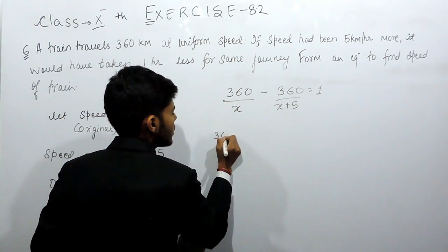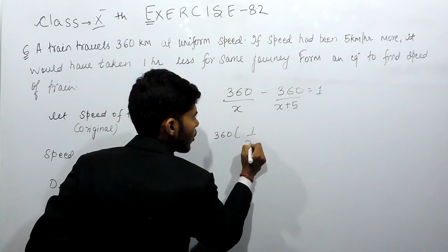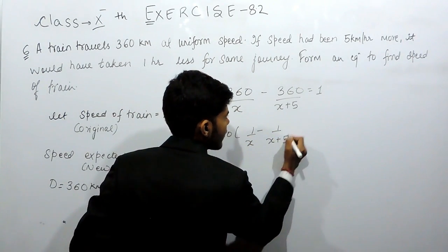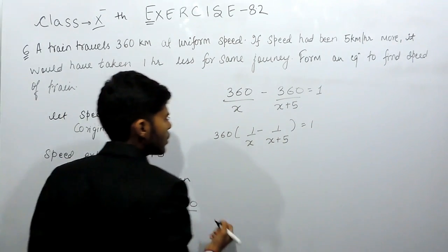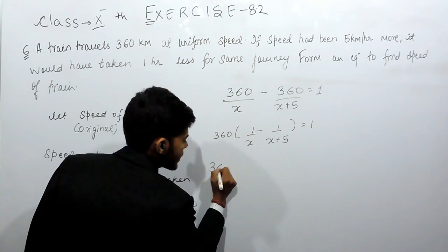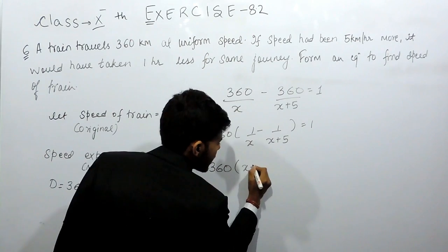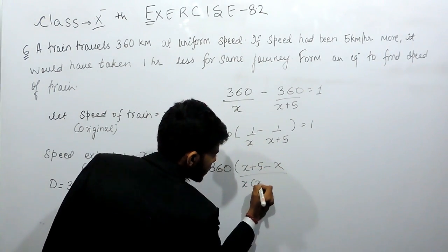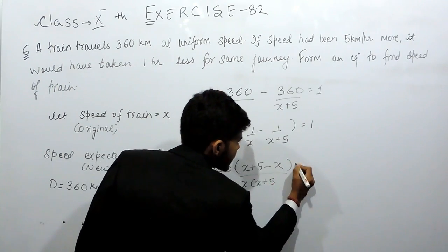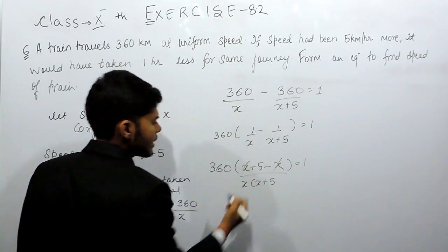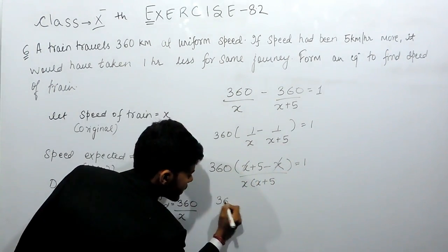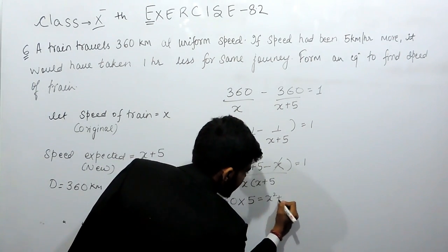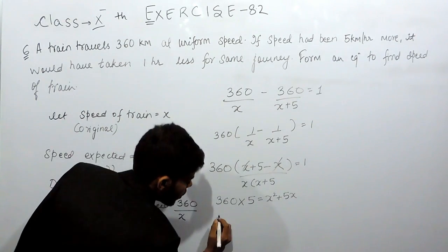So, 360 will be common. It will be 1 upon x minus 1 upon x plus 5 and this will be equals to 1. So 360, this will be x plus 5 minus x upon x times x plus 5, and this will be equals to 1.